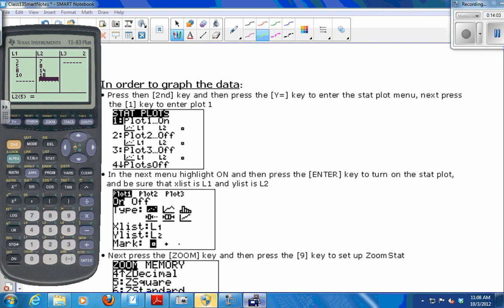So if I want to graph the data, I want to press second Y equals. And this is the stat plot menu. Choose option one, plot one. And I want it to be on, so I have to have the cursor on the on and press enter. And then I always just leave the type as this first one. For X list, I want it to be list one. That's my X list. And my list of Y values is list two. So mine is in there incorrectly. It says list four. So I'm going to change it to list two. So you can see in yellow, above the numbers, is L1, L2, L3. I'm going to change it to L2 by pressing second two. And then I think that this is the best mark, this first one. But you can use the other two if you want.